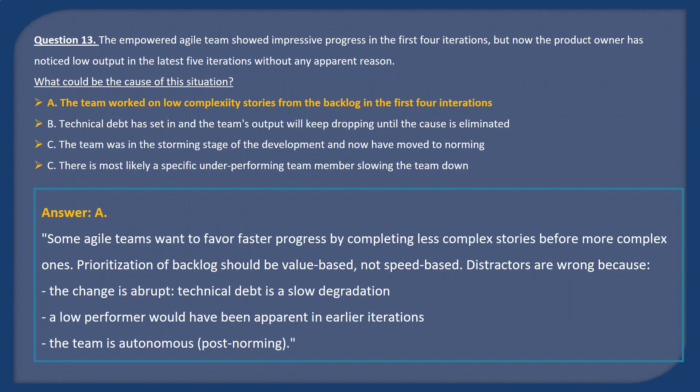Answer A. Some Agile teams favor faster progress by completing less complex stories before more complex ones. Prioritization of the backlog should be value-based, not speed-based. Distractors are wrong because the change is abrupt — technical debt is a slow degradation, a low performer would have been apparent in earlier iterations, and the team is autonomous and post-norming.